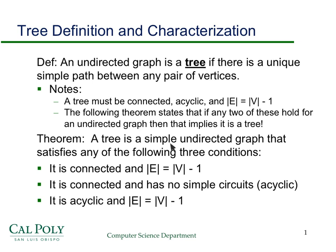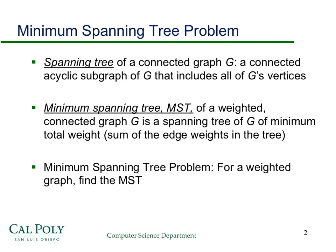A tree is a simple undirected graph that satisfies any two of the following three conditions: it's connected and the number of edges equals the number of vertices minus one; or it's connected and has no simple circuits (i.e., it's acyclic); or it's acyclic and the number of edges is one less than the number of vertices.